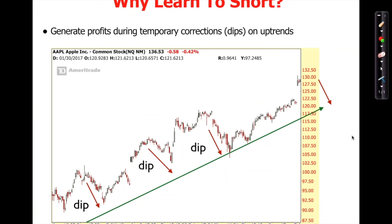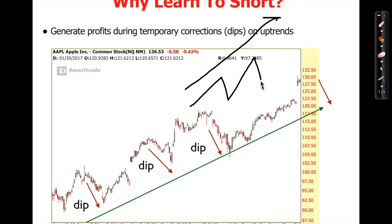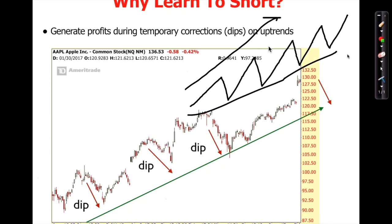Even during an uptrend, even when a stock is going up, it doesn't go up in a straight line. Stocks and markets go through an impulse-retracement pattern — kind of like breathing in and out. You've got to breathe in before breathing out. Oftentimes, before a stock goes higher, it has to pull back first before moving forward.